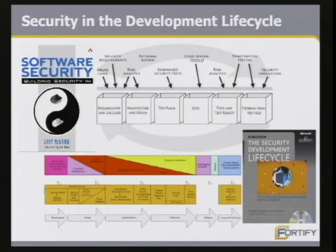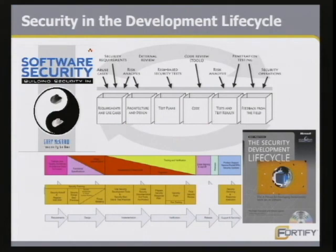The real solution — and people have been talking about it for five, six, seven years now — is to build security into the entire software development life cycle. Two key books on this topic are Software Security by Gary McGraw and The Security Development Lifecycle by Michael Howard and the team at Microsoft. Both describe pretty heavyweight processes; in Microsoft's case, it's the process they use for their own software development, and both are more rigorous approaches to building security in.